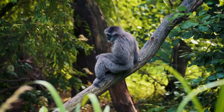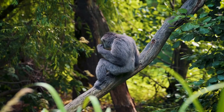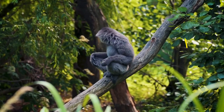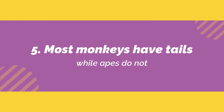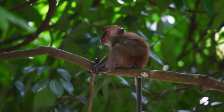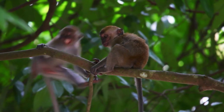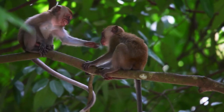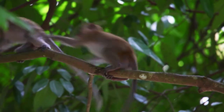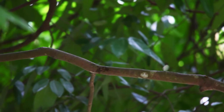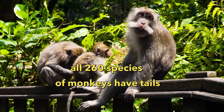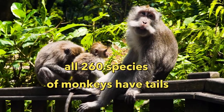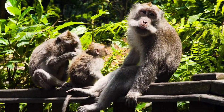The five main differences that separate monkeys versus apes. Number 5: Most monkeys have tails, while apes do not. The easiest way to distinguish apes from monkeys is by the presence or absence of a tail. With only a couple of exceptions, all 260 species of monkeys have tails, but no apes have tails.